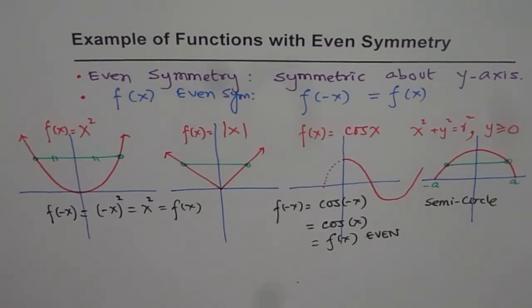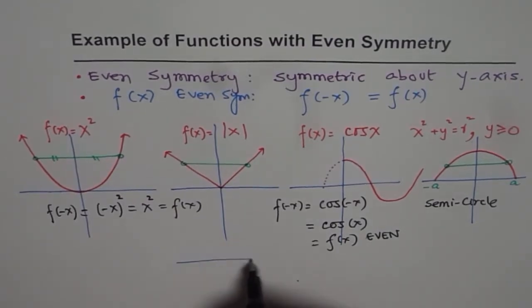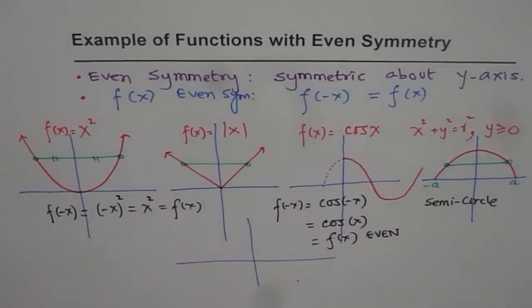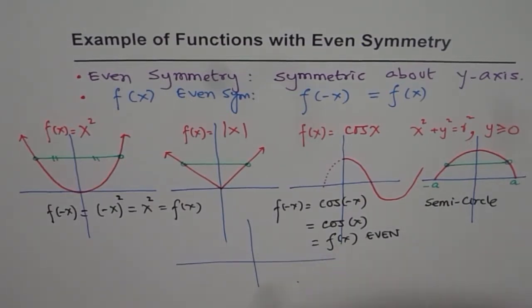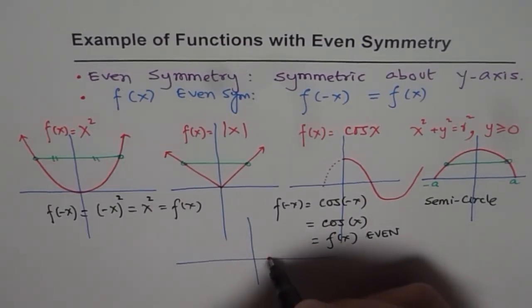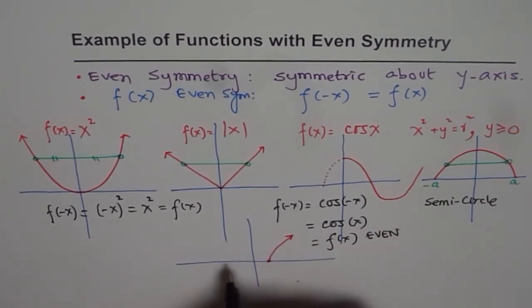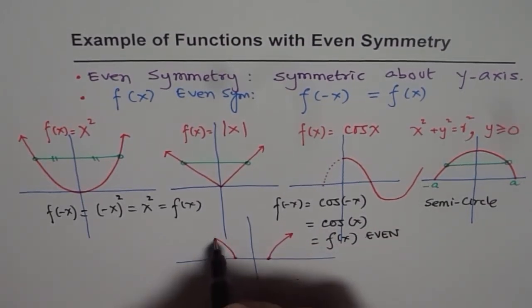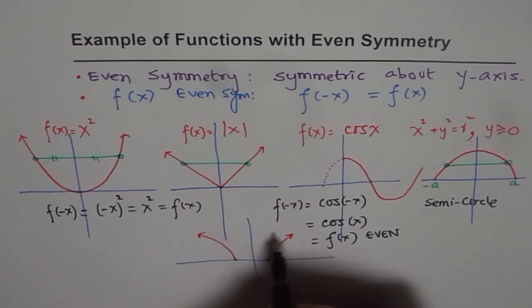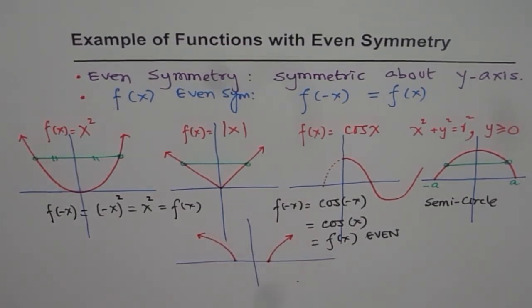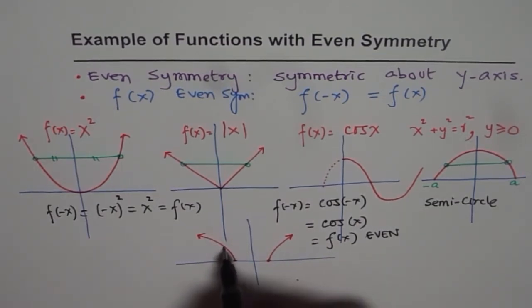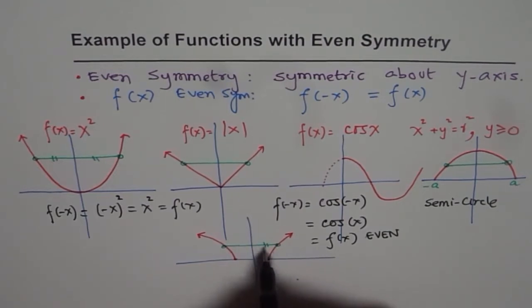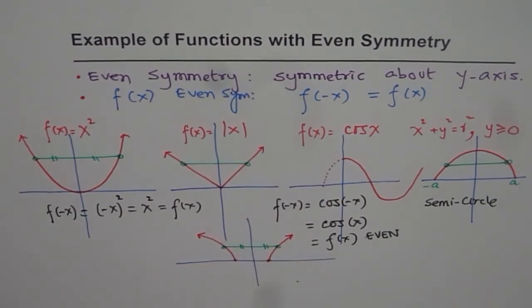You can always draw some graph which will have even symmetry. For example, since we ran out of this space, let me just use a space here. If I say, let me just draw something which has even symmetry. I can draw something like this, and something symmetric. So the idea is, if my function is symmetric about the y-axis, then I can ensure that that is true. Then these functions are also even.